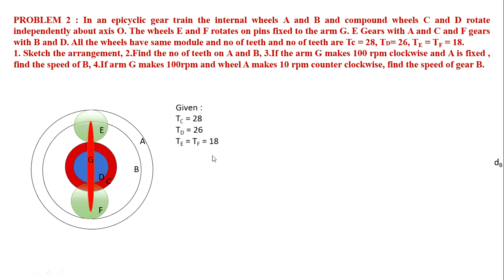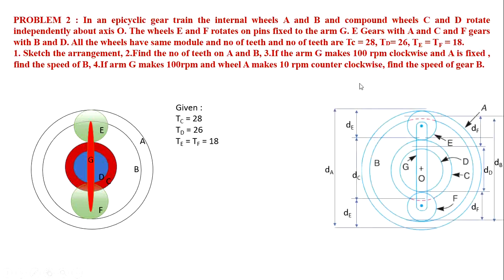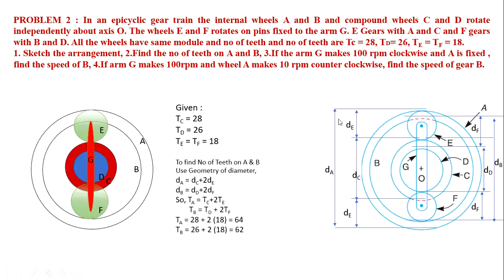From this configuration, we determine the remaining data. Given: TC = 28, TD = 26, TE = TF = 18. From the geometry, the diameter of A equals diameter of C plus 2 times diameter of E: DA = DC plus 2DE. Similarly, DB = DD plus 2DF. Replacing diameter with number of teeth: TA = TC plus 2TE, TB = TD plus 2TF. Substituting values: TA = 28 plus 36 = 64, TB = 26 plus 36 = 62.